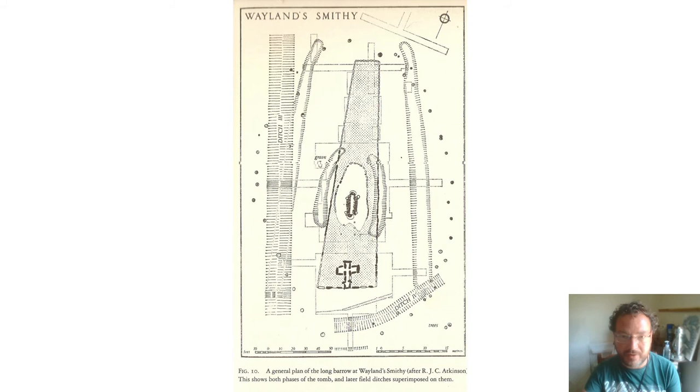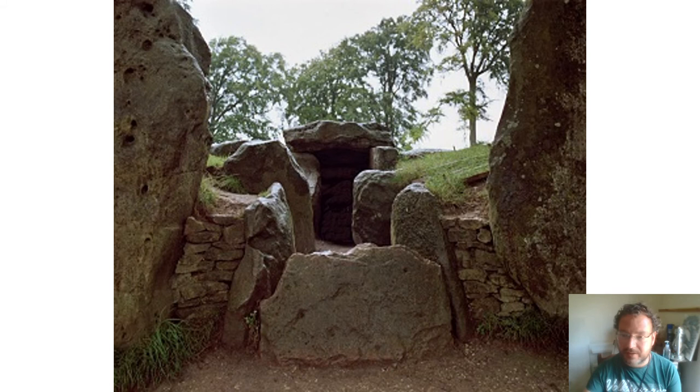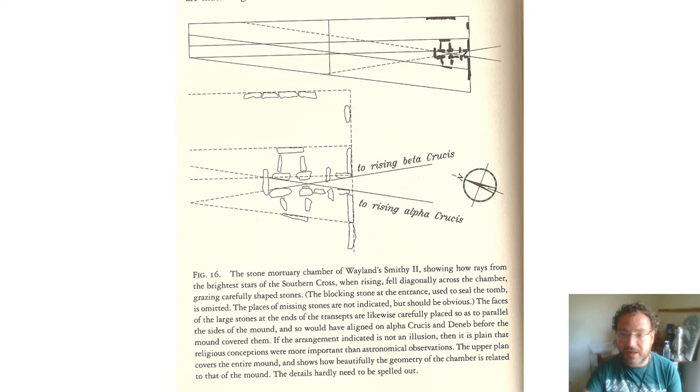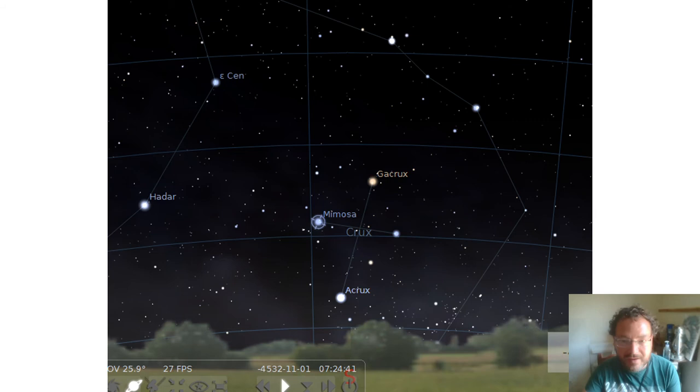Perhaps his most interesting site is Wayland Smithy, which is a long barrow in Oxfordshire, not far from the White Horse at Uffington. It's a strange kind of wedge-shaped barrow. And it has these amazing flanking stones outside the main chamber. Now, North used computer software available to him in the early 90s to show that the chamber seemed to be built to have sight lines towards the stars of Crux. This is the Southern Cross.